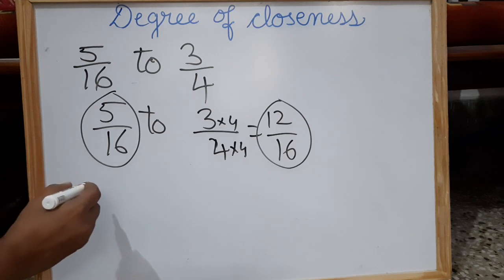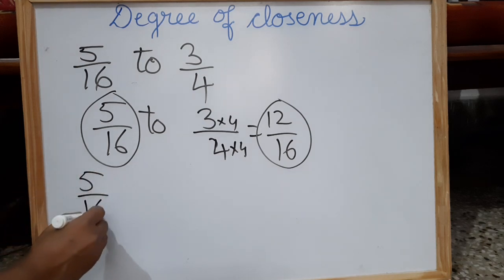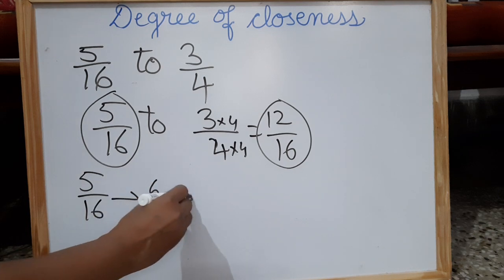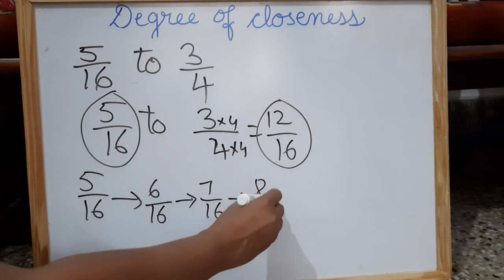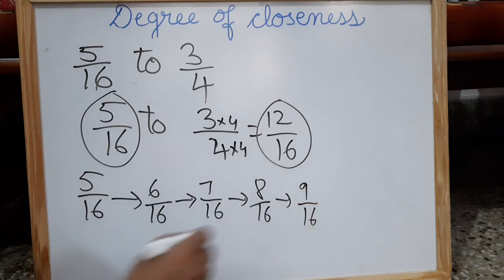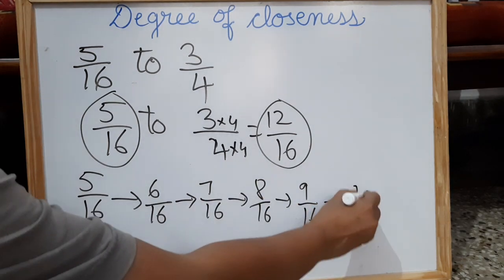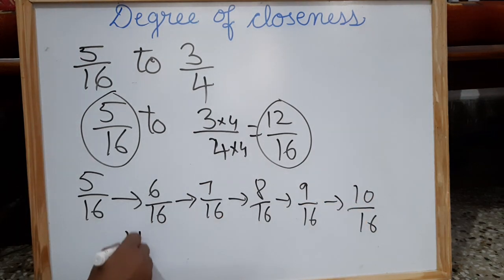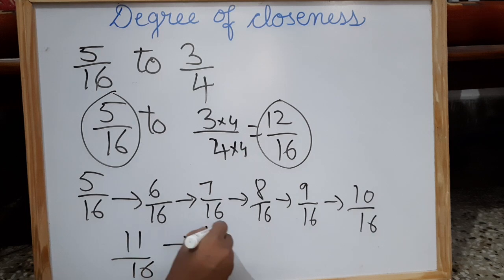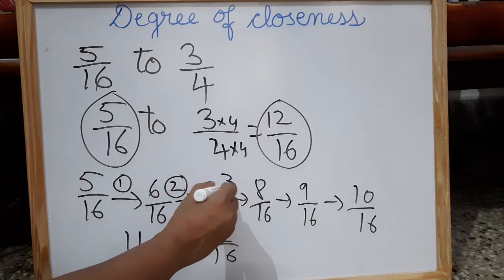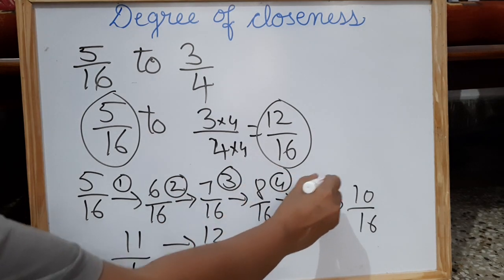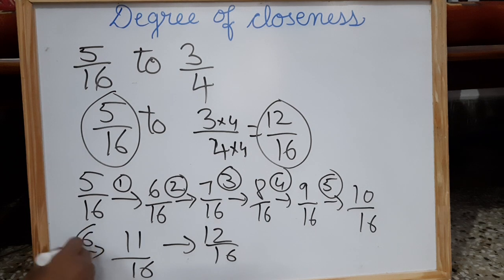Now you have to find the degree of closeness from 5 by 16 to 12 by 16. Start at 5 by 16: one step gives 6 by 16, one step gives 7 by 16, one step gives 8 by 16, one step gives 9 by 16, one step gives 10 by 16, one step gives 11 by 16, one more step gives 12 by 16. That is 7 steps.